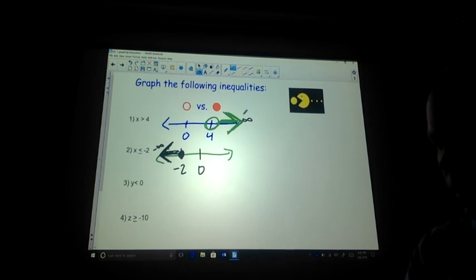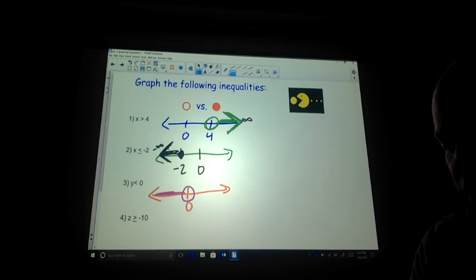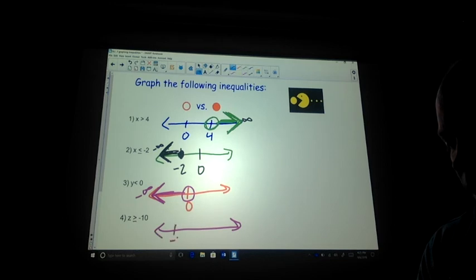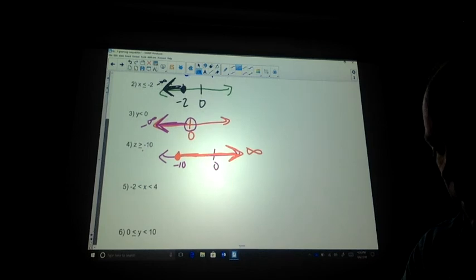And then this one, we want values that are smaller than zero. Well, that means I want all of the values that are negative. So it's going to be an open dot because I don't have the equal sign, and I'm going to shade it to the left. That goes to negative infinity as well. And then this last one, we have values that are bigger than negative ten, greater than or equal to negative ten. So if this is negative ten here, and I have zero down here, I have a closed dot because it's equal to. And then I want values bigger than that. So negative nine, eight, seven, six, five, all the way to positive infinity.